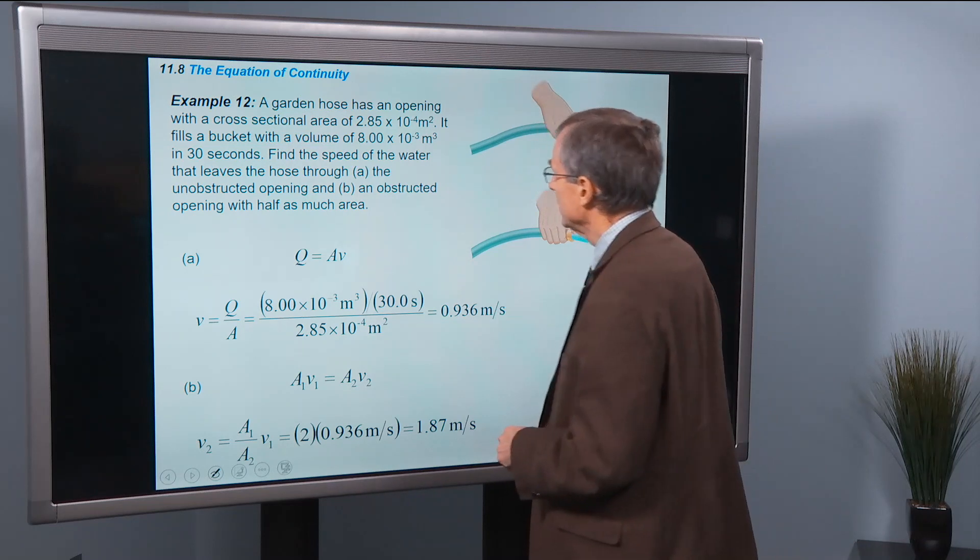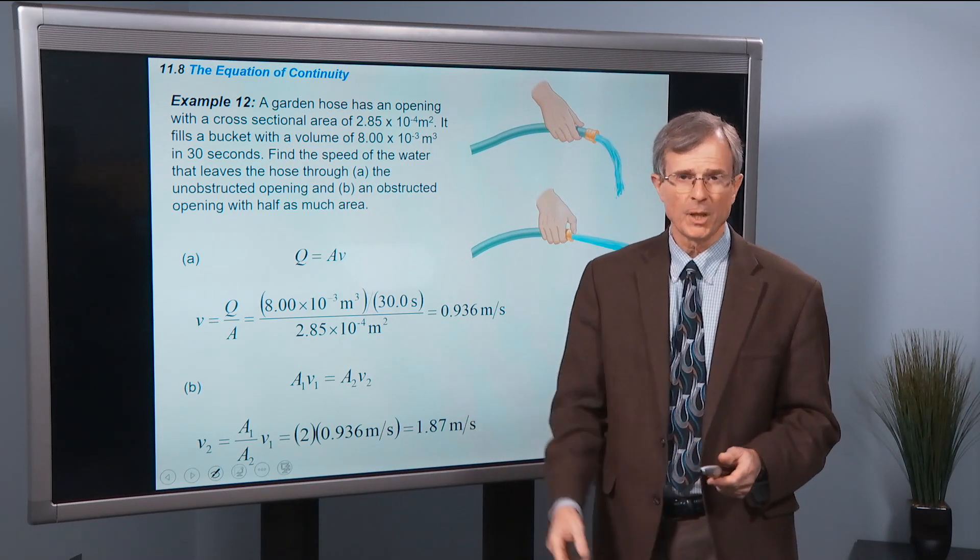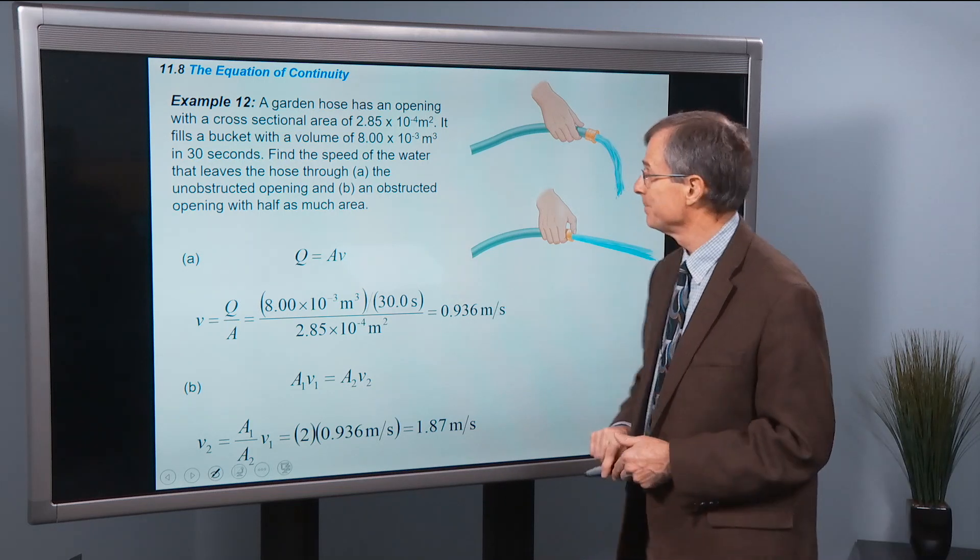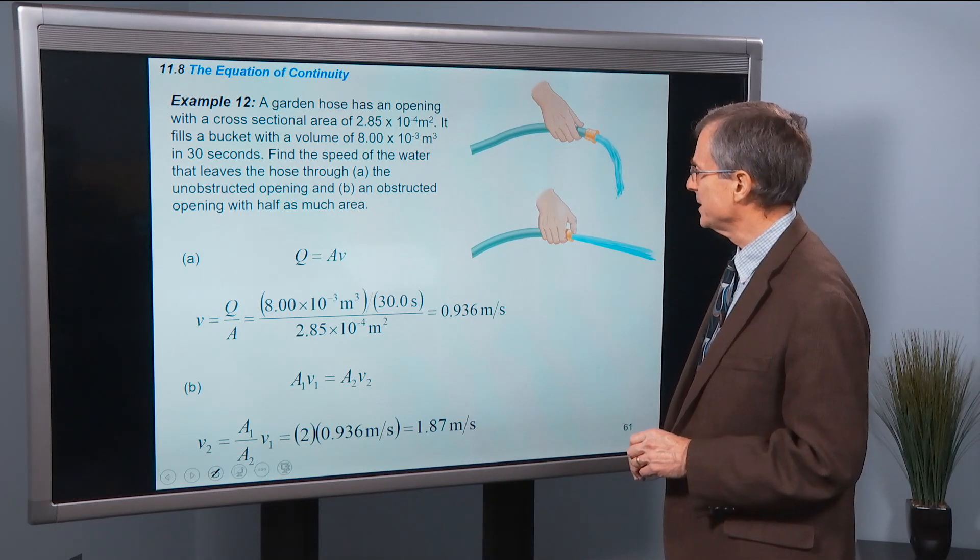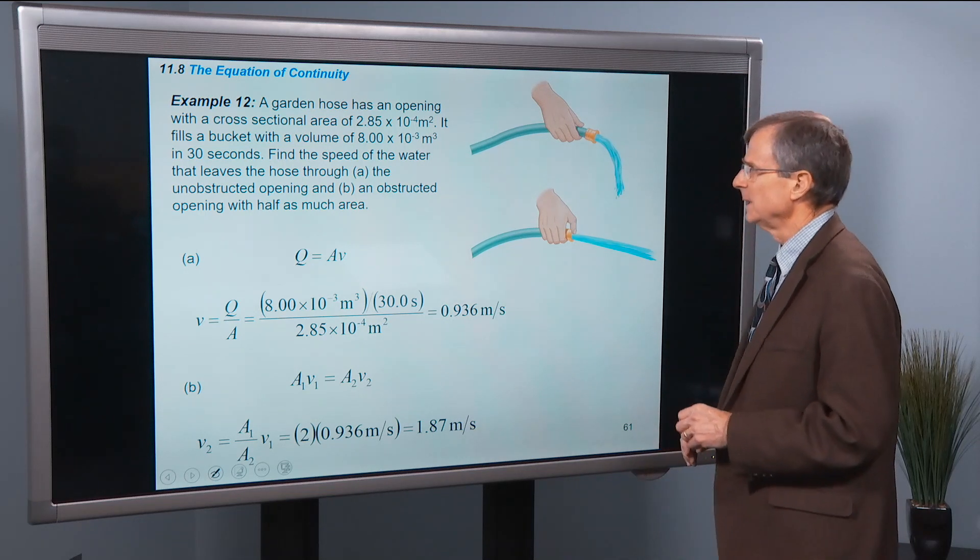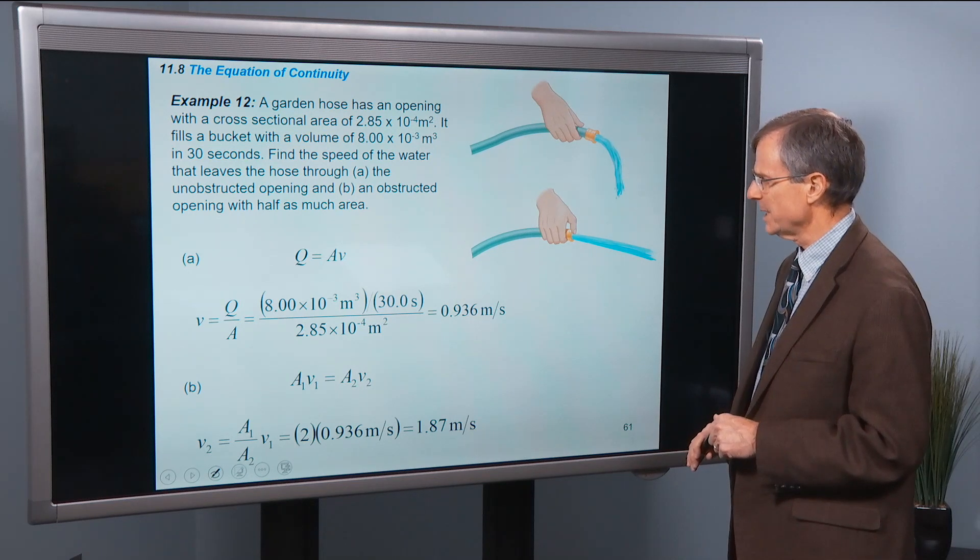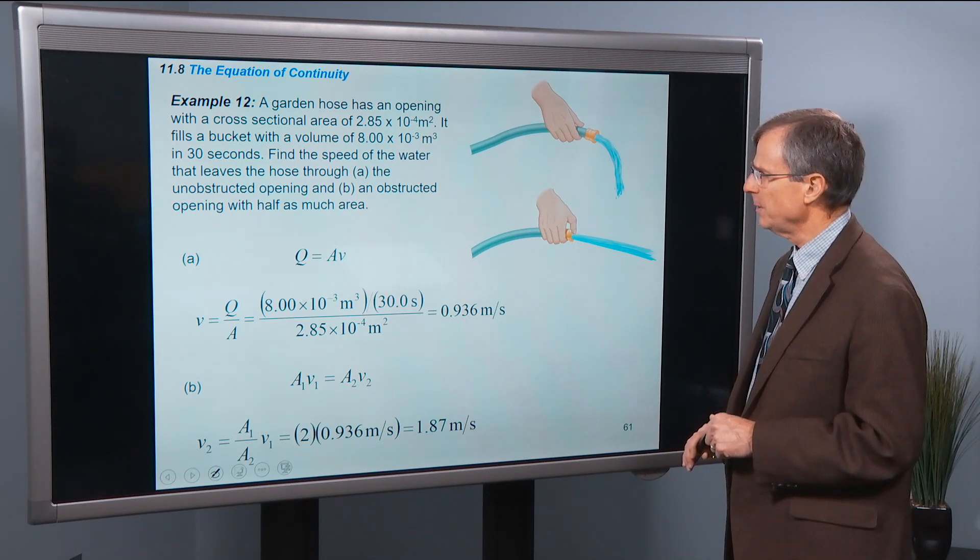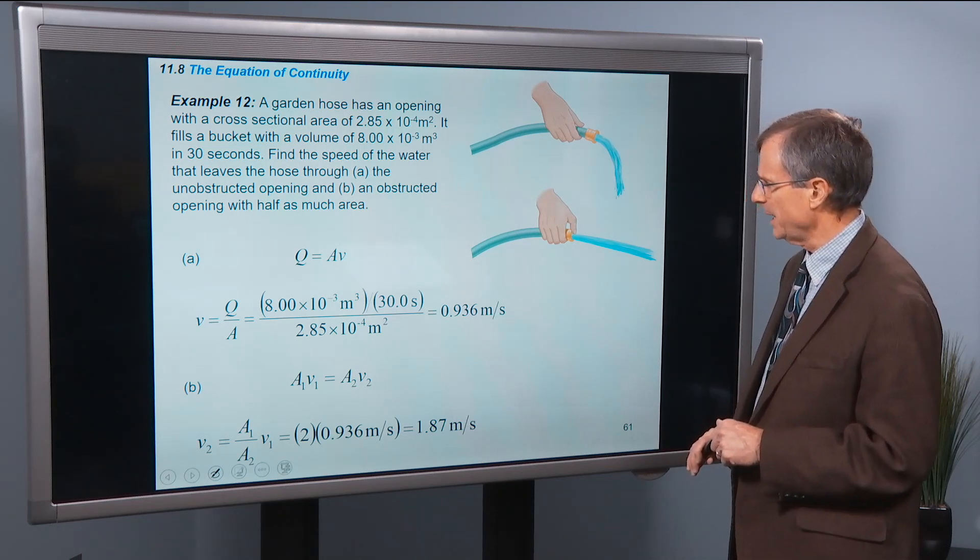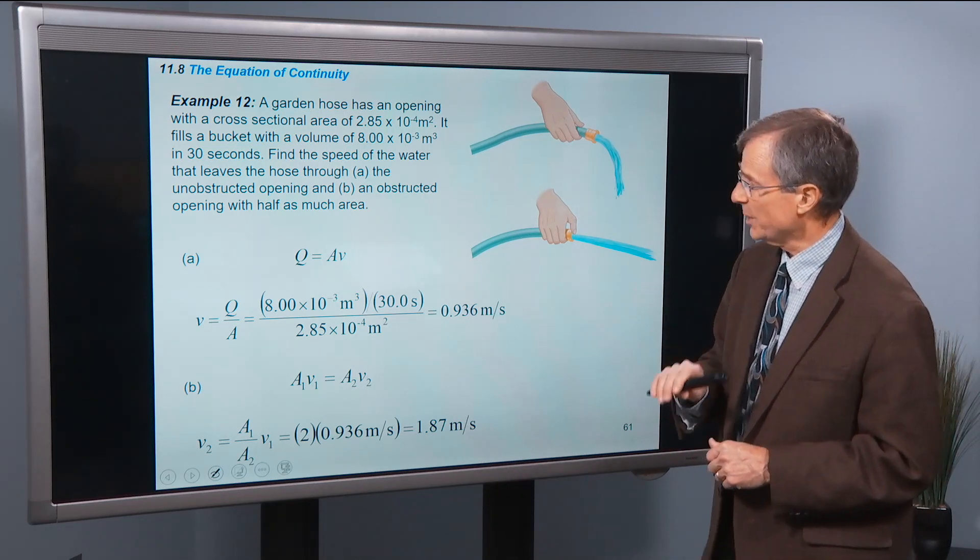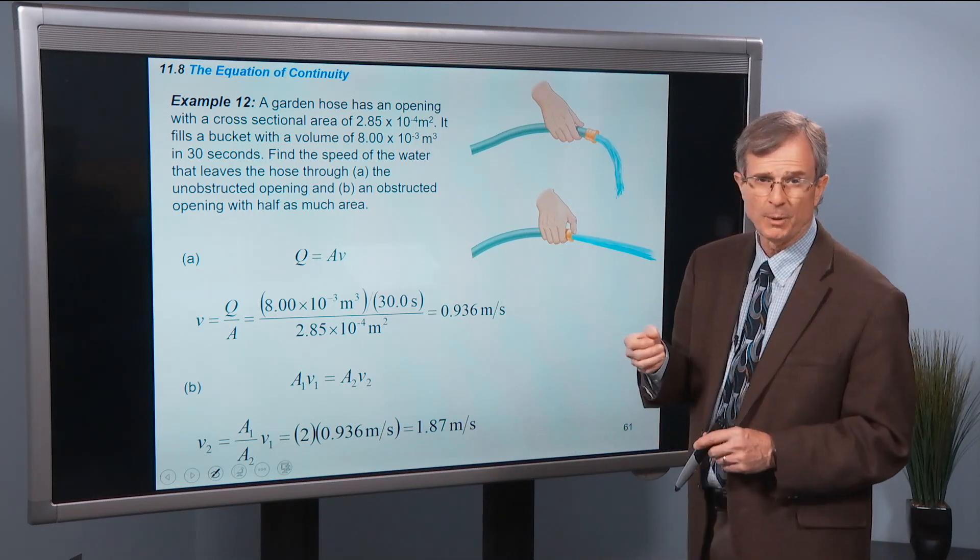An example, garden hose. You've all taken a garden hose and put your thumb over it, try to get a higher velocity. This is that problem. Garden hose has an opening with a cross-sectional area of 2.85 times 10 to the minus 4 square meters. Fills a bucket with a volume of 8 times 10 to the minus 3 cubic meters in 30 seconds. Find the speed of the water that leaves the hose through the unobstructed opening and an obstructed opening with half as much area, like this case here, where you put your thumb over the opening.